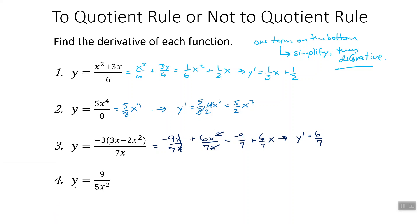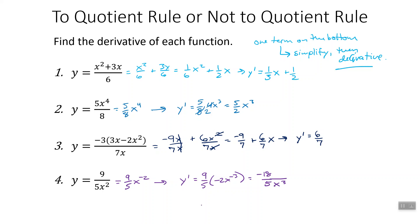Last one: we've got x's on the bottom and a number on top. We can bring up the x and say this is nine fifths x to the negative 2, then just do a power rule. y prime: bring down the negative 2 to get nine fifths times negative 2x to the negative 3. One less than negative 2 is negative 3. So we get negative 18 over 5 times x to the negative 3. The x can go down to the bottom, becoming x to the third, so the final answer is negative 18 over 5x cubed.